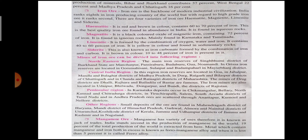There are four varieties of iron ore. First, hematite; second, magnetite; third, limonite; fourth, siderite. Hematite is red and brown in color, contains 60-70% iron, and is the best quality iron found in abundance in India. It is found in aqueous rocks.